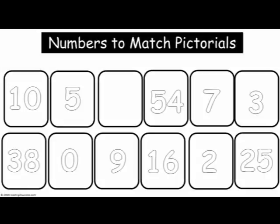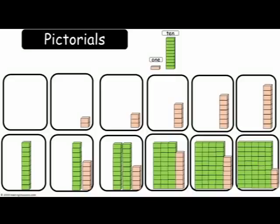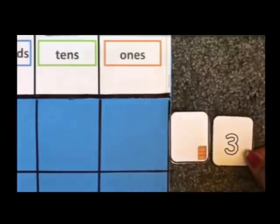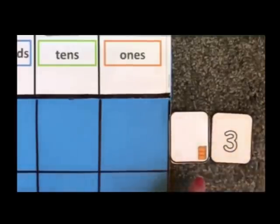These are the number cards that kids will use in the first activity, and they will need to match them with the correct pictorials. This will build a strong understanding of what each number actually represents. In this activity we're working with ones and tens — two-digit numbers — and we want the children to match the pictorial with the actual number.